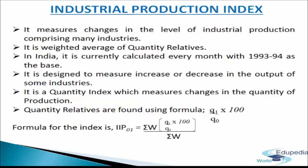During a given period there may be an increase in the output of some industries and a reduction in the output of others. Index numbers of industrial production are designed to measure the increase or decrease in the level of industrial production in a given period compared to some base period. This index is a quantity index and not a value index — it measures changes in the quantity of production, not in the value of production.